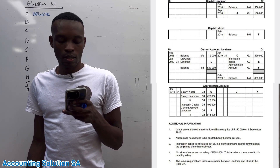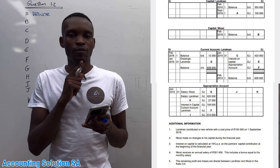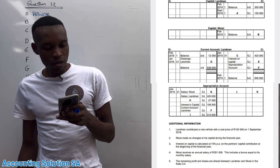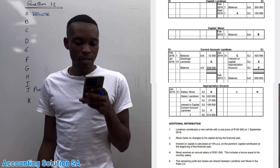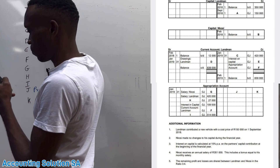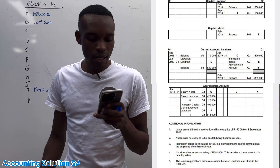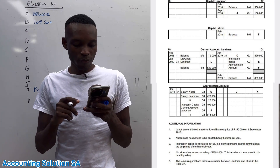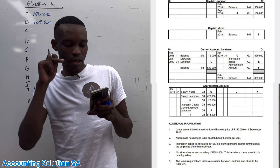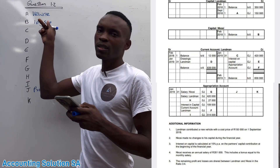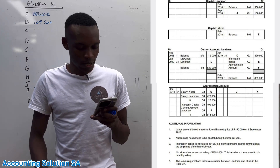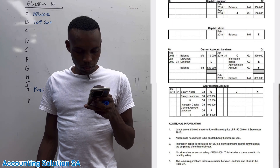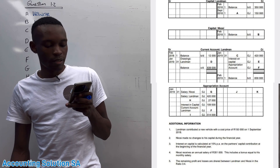Number B is Nkosi's capital. How are we going to calculate this? They never stated it directly, but we know that interest on capital is 15%, so we can do a reverse calculation. Under the appropriation account we have interest on capital of 109,500. But this interest on capital is for both partners, so we have to find Nkosi's portion only - so we can reverse it to get his capital amount. We subtract Landman's interest to remain with Nkosi's interest, then reverse to get his capital.